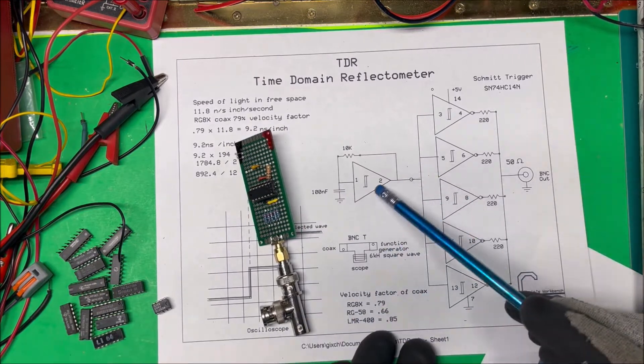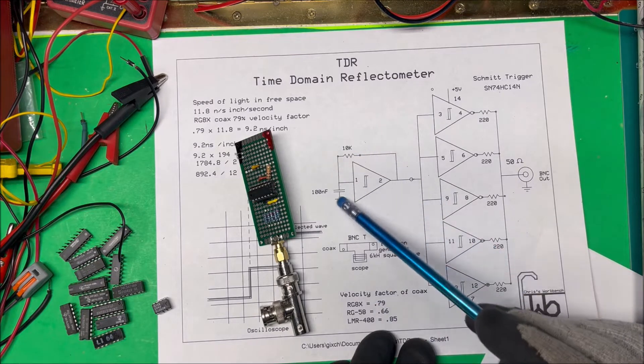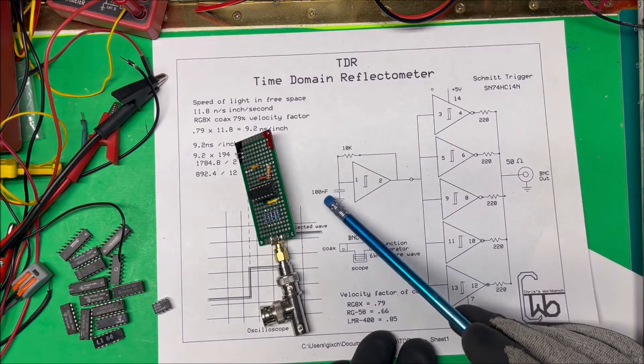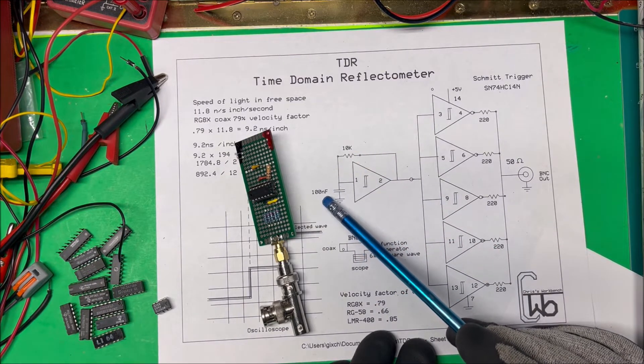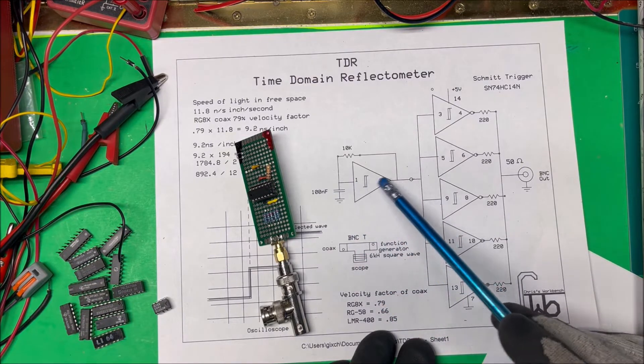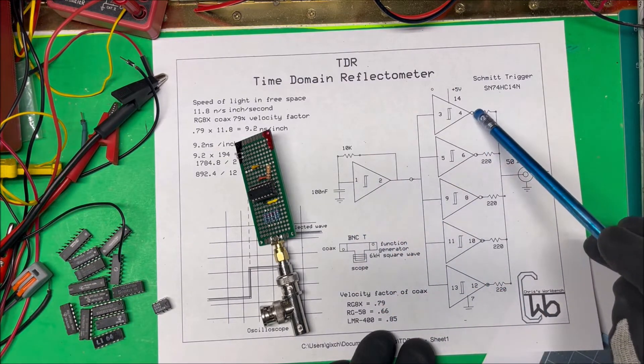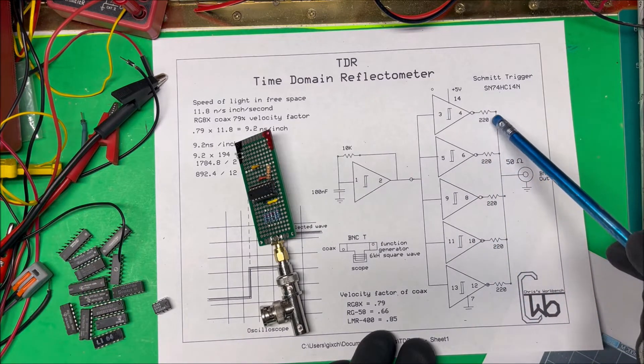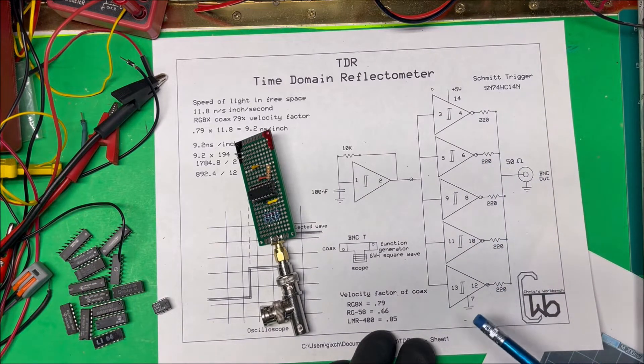Now this one's made out of a Schmitt trigger and all this here is a little oscillator. Now I had a hundred nanofarad, I'm going to change that to 10 to get the frequency up a little bit higher. This inverts the signal here and then on this side it'll invert it back.